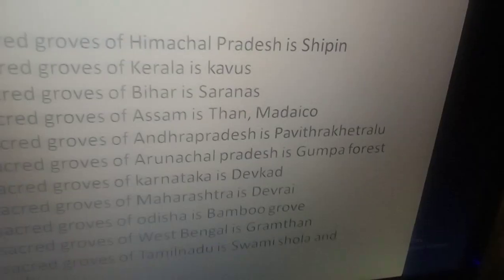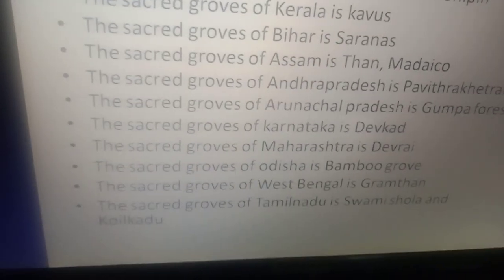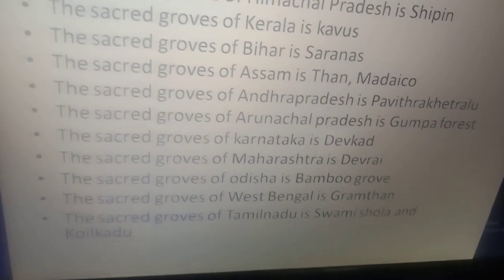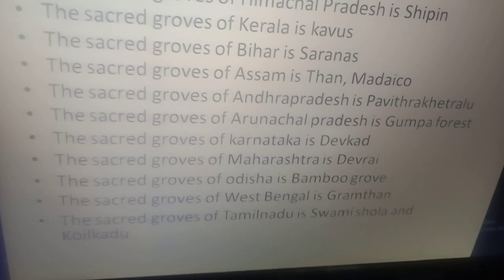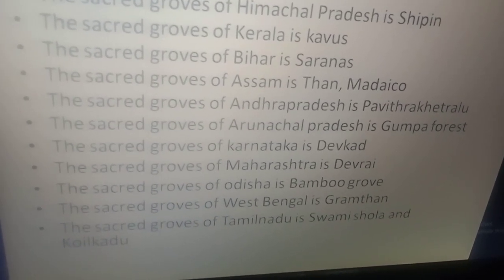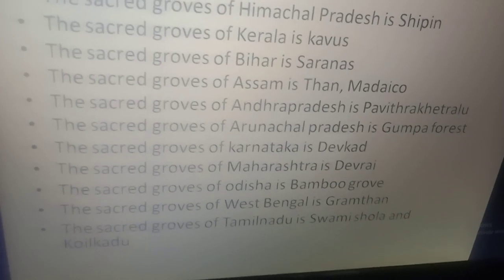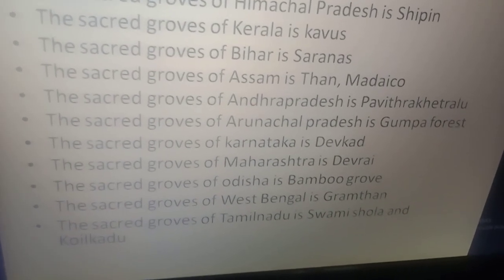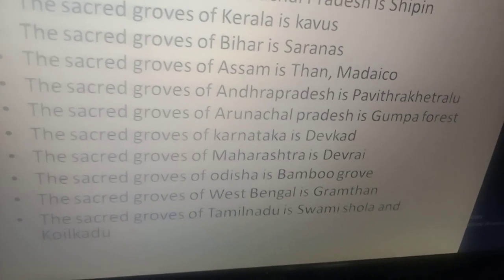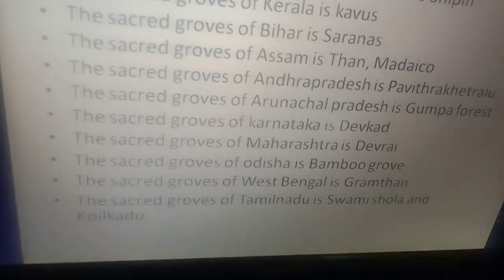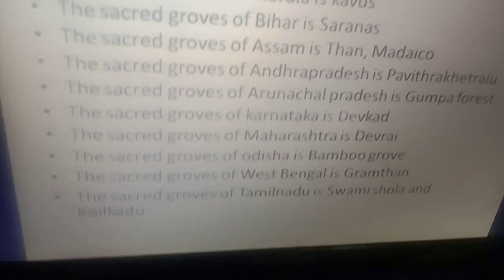The sacred grove of Arunachal Pradesh is Gumpa Forest. The sacred grove of Karnataka is Devkad. The sacred grove of Maharashtra is Devrai. The sacred grove of Odisha is Jagannath Grove. The sacred grove of West Bengal is Gramthan. The sacred grove of Tamil Nadu is Swami Shola and Kovilkadu.